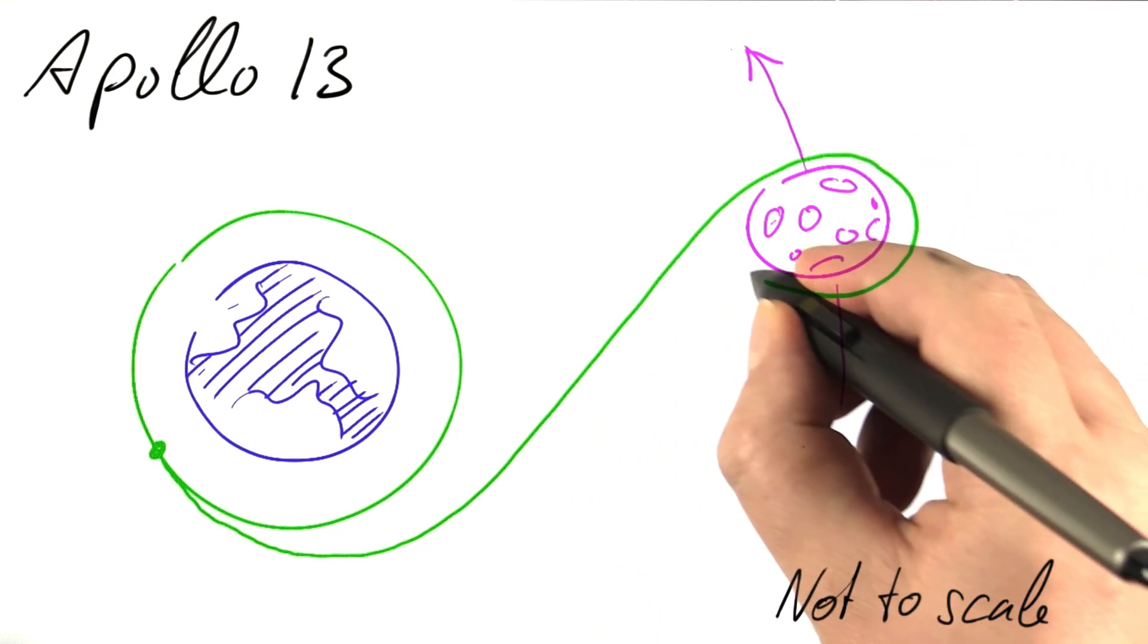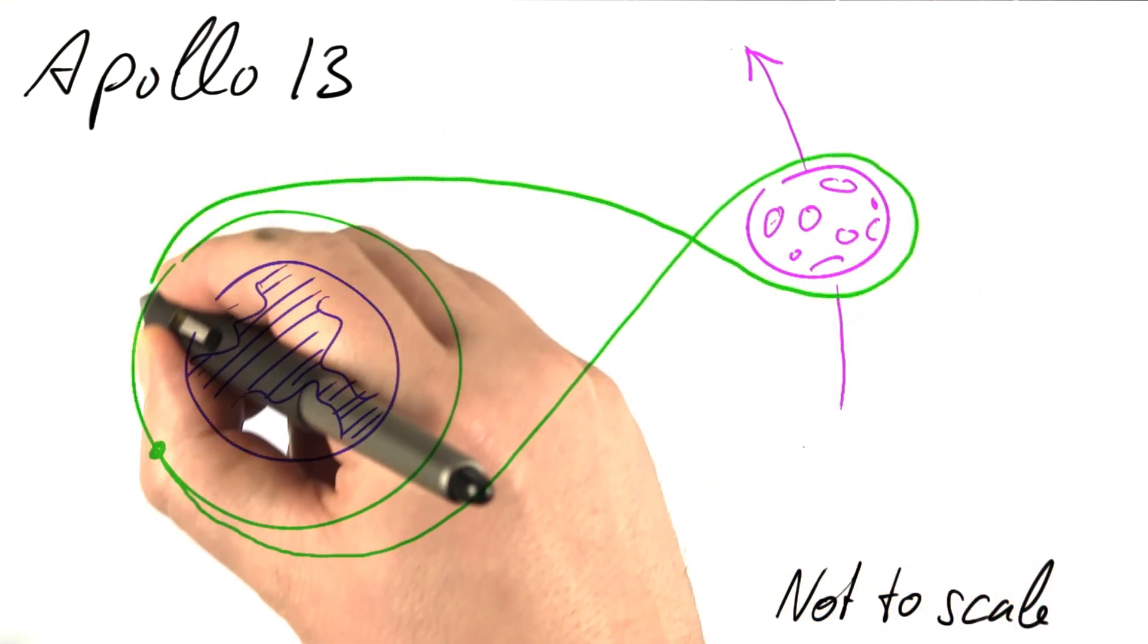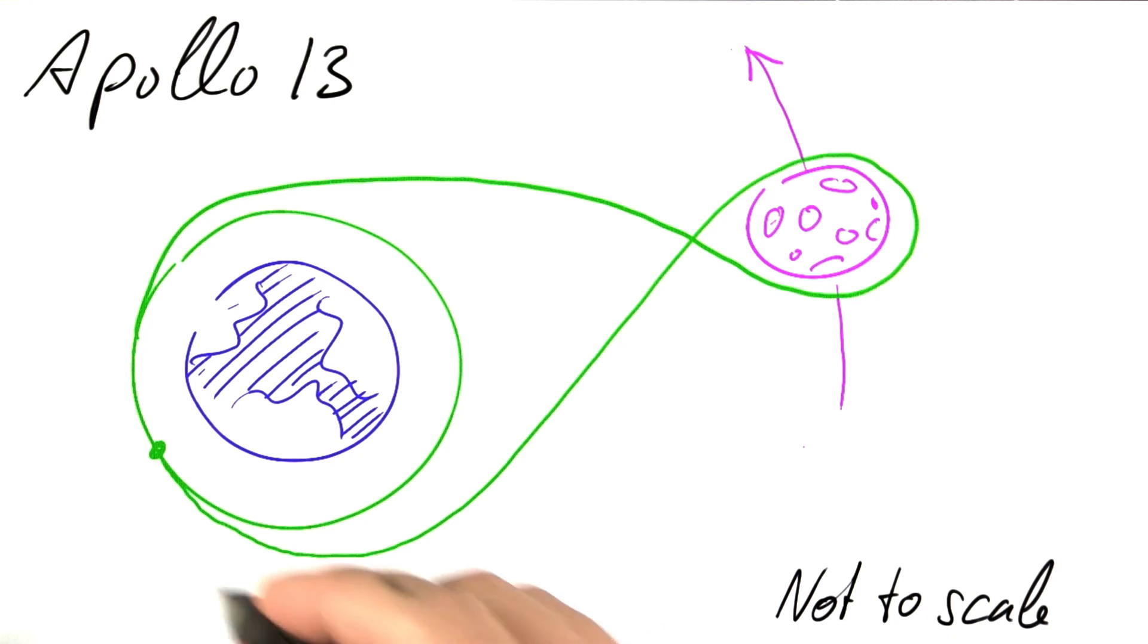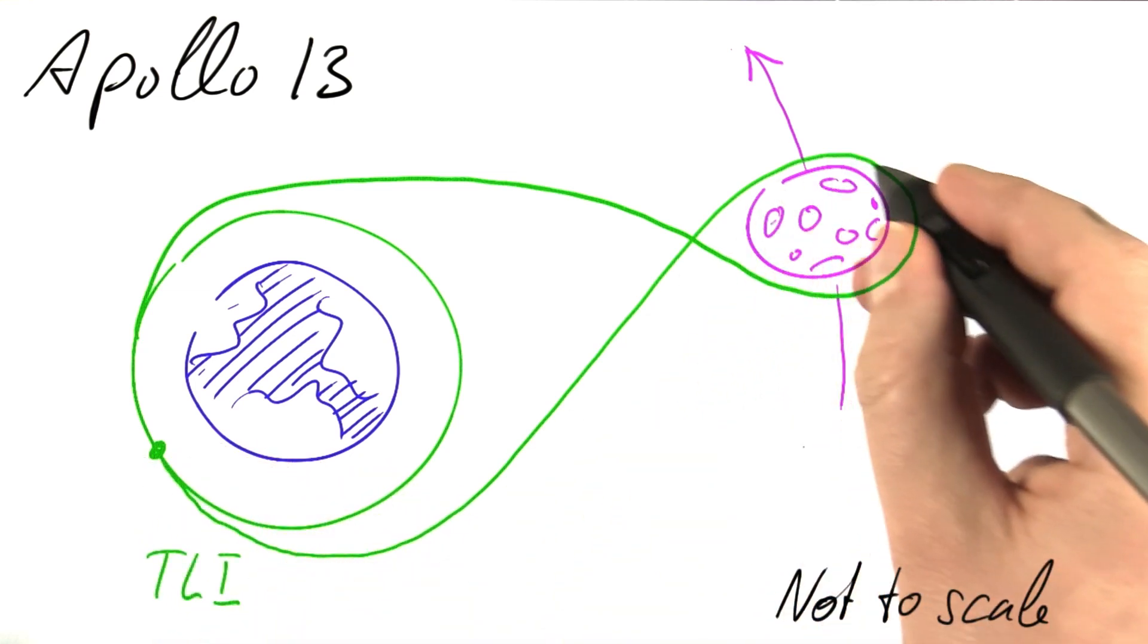The rocket is fired again. This will result in such a trajectory. This phase here is called Translunar Injection.